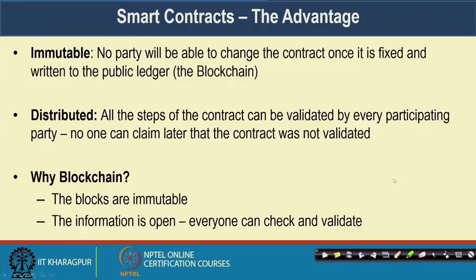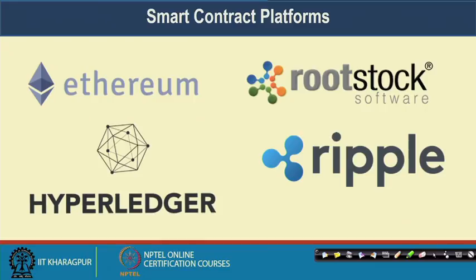The advantages of smart contracts are: first, they are immutable — no party can change the contract once it is fixed and written to the public ledger like a blockchain. Second, it is distributed — you do not need a middleman like Kickstarter. Your code will automatically execute, and if you are not fulfilling your promise, the code will automatically execute steps based on the contract. Blockchain is suitable because blocks are immutable and information is open — everyone can check and validate. There are multiple smart contract platforms like Ethereum, Hyperledger, Rootstock, and Ripple. We will look into Hyperledger in detail.